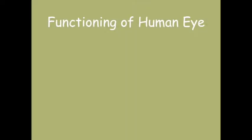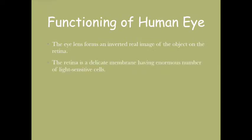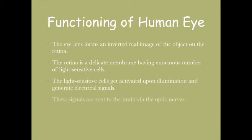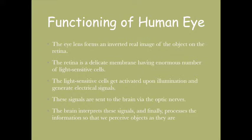The eye lens forms an inverted real image on the retina. The retina is a delicate membrane having an enormous number of light-sensitive cells. These signals are then sent to the brain with the help of optic nerves. The brain interprets these signals and processes the information so we can perceive objects in front of us.